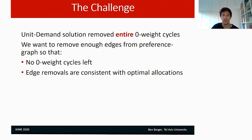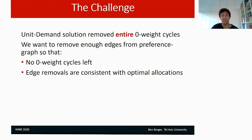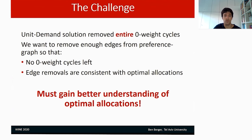So what is our challenge? The unit demand solution removed entire zero-weight cycles from the graph — every edge participating in some zero-weight cycle. What we want to do instead is remove enough edges from the preference graph, not necessarily all edges in zero-weight cycles, such that on one hand no zero-weight cycles remain, but on the other hand we don't remove so many edges that buyers gain too much freedom to deviate to bundles inconsistent with optimal allocations. To do this, we must first gain a better understanding of how optimal allocations look in multi-demand markets.